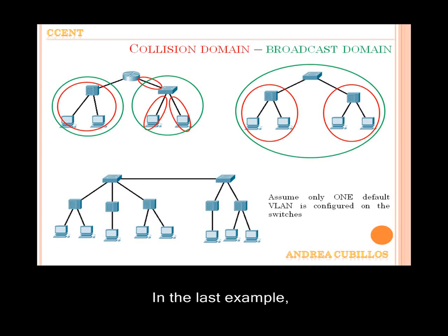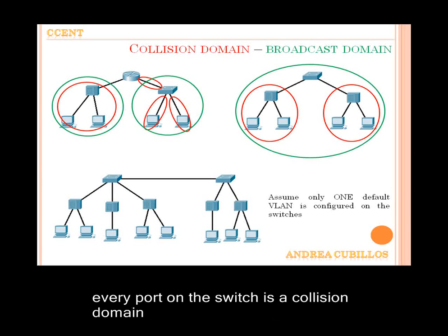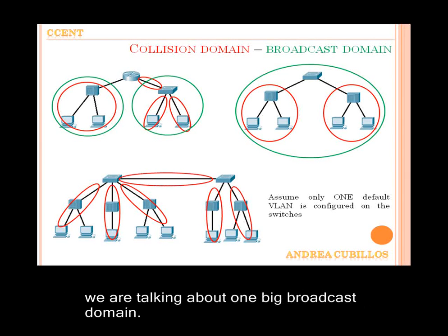In the last example, let's assume only one default VLAN is configured on the switches. Every port on a switch is a collision domain, and because there's only one default VLAN, we're talking about one big broadcast domain.